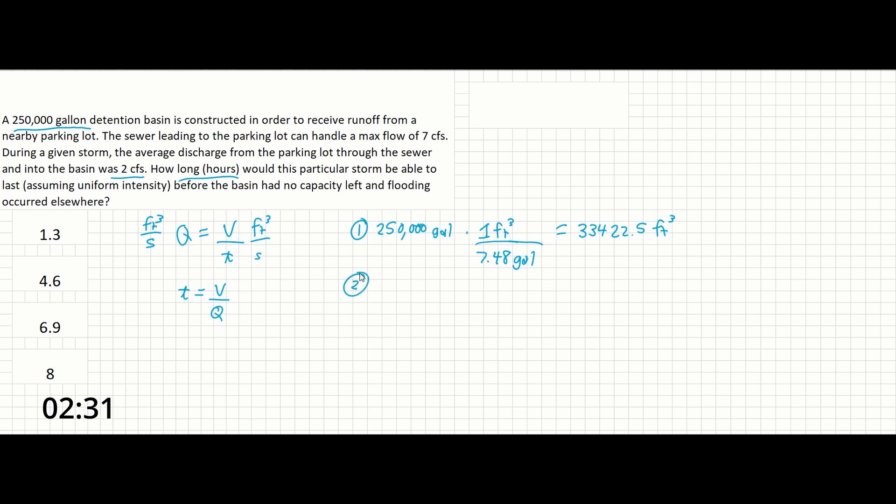Step 2. Knowing T equals V over Q, we just need to solve. So we have our volume at the top here. And we've been given our Q in the problem. So 33,422.5 cubic feet over 2 cubic feet per second. And this gives us just about 16,711.2 seconds.